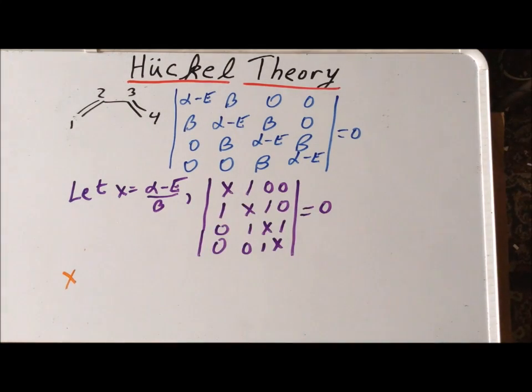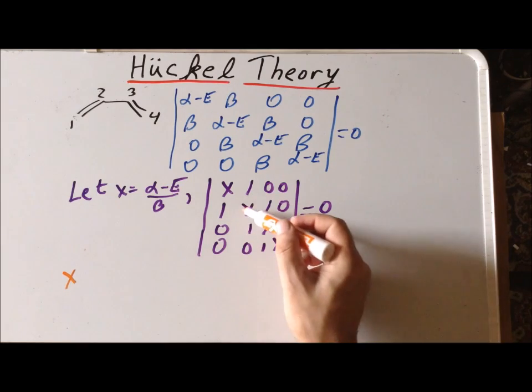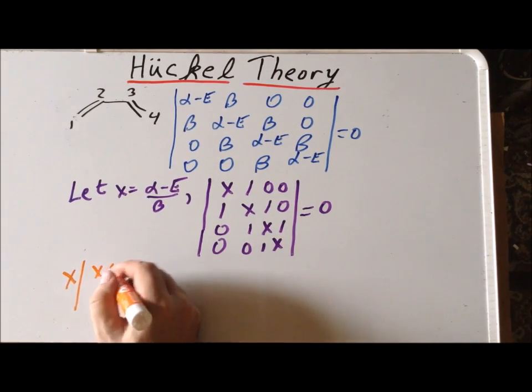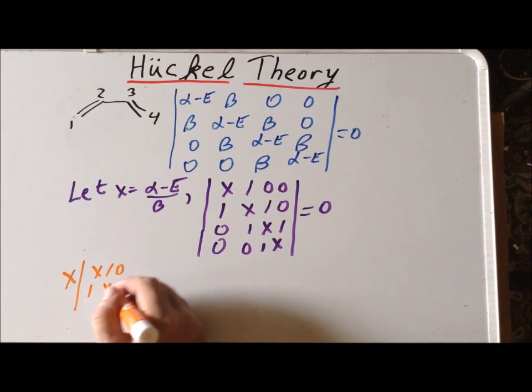And this multiplies what will now be a three by three determinant that's formed by removing the first column and the first row. So, the resulting three by three determinant, you see, starts here is x, 1, 0; 1, x, 1; 0, 1, x.